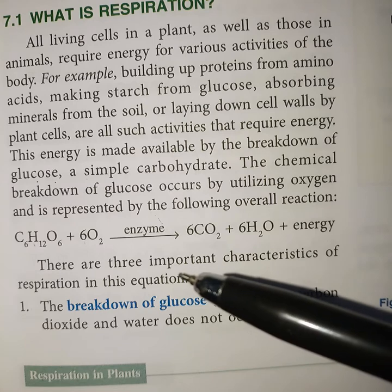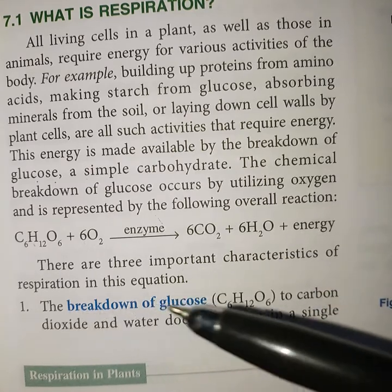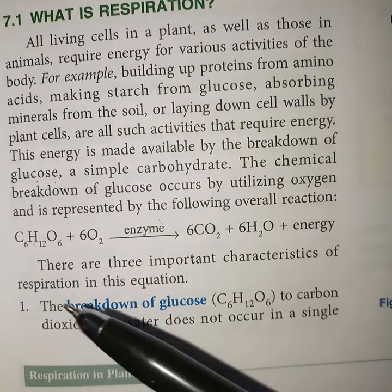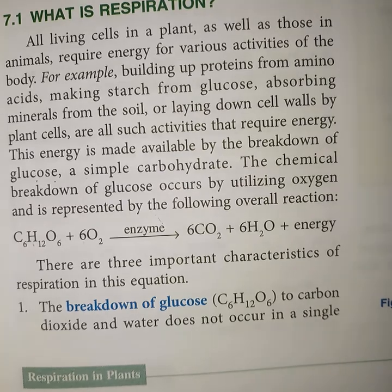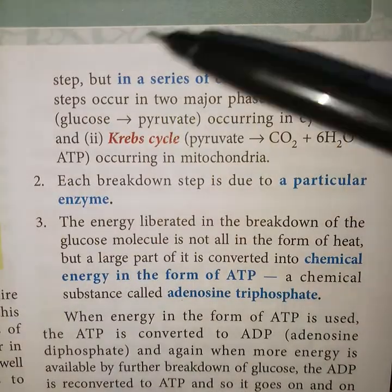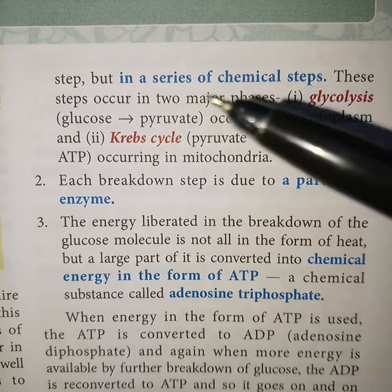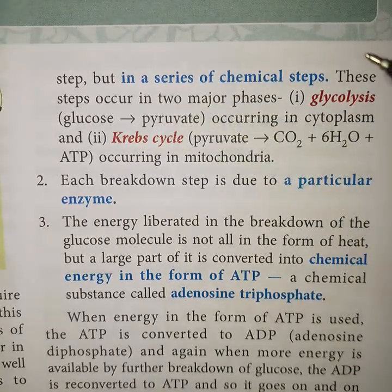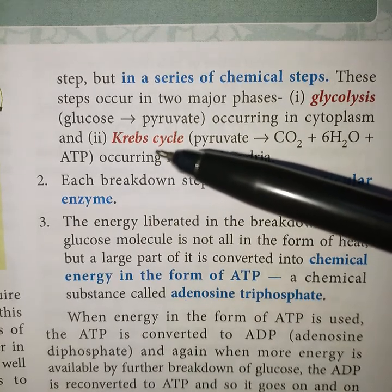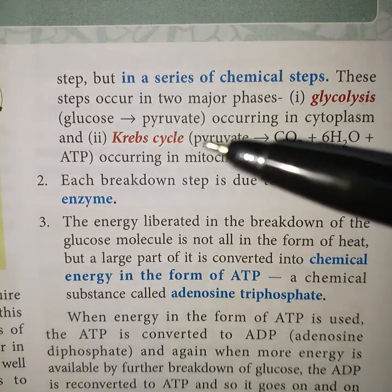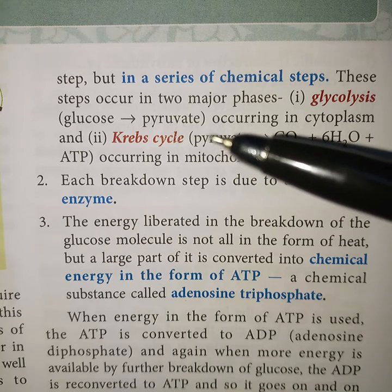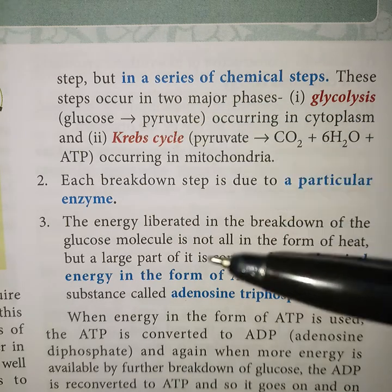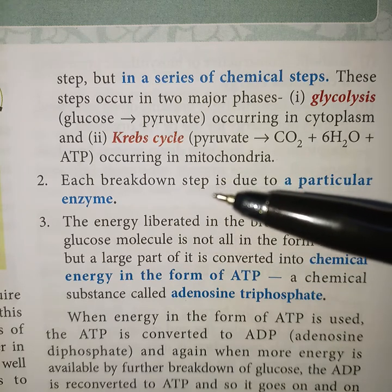The first characteristic: the breakdown of glucose to carbon dioxide and water does not occur in a single step but in a series of chemical steps. These steps occur in two major phases. The first one is glycolysis and the second one is the Krebs cycle. Glycolysis means the breakdown of glucose into two molecules of pyruvate or pyruvic acid, and it occurs in the cytoplasm of a cell.